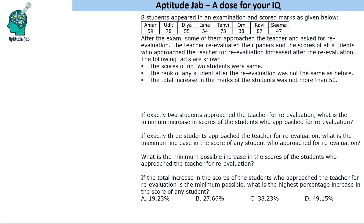Welcome to Aptitude Lab. This is a logical DI problem. There are eight students who appeared in an examination and their scores are given in the table. After the examination, some of these students approached the teacher and asked for re-evaluation. The teacher re-evaluated their papers and the scores of all those students who had approached the teacher increased after the re-evaluation.